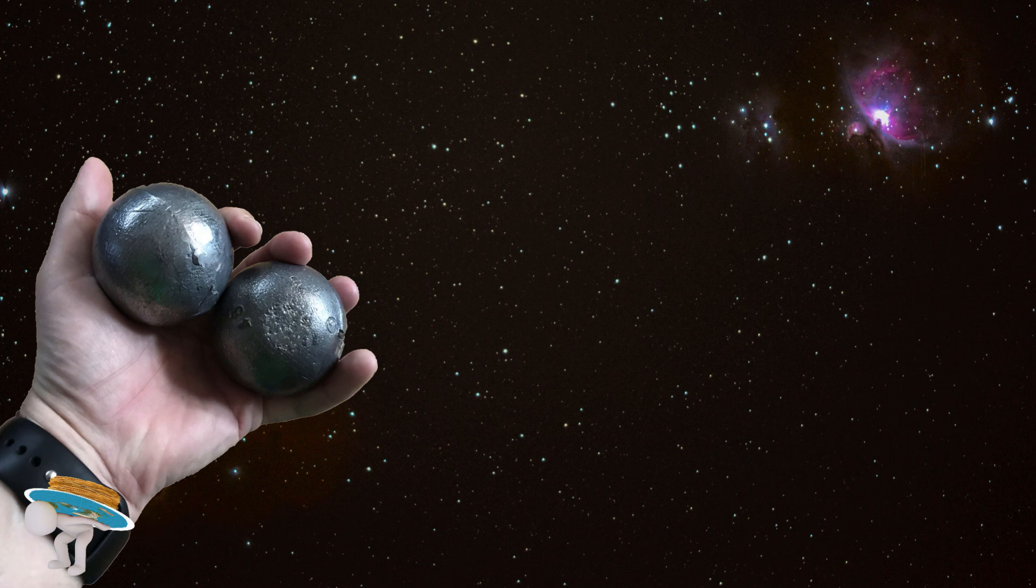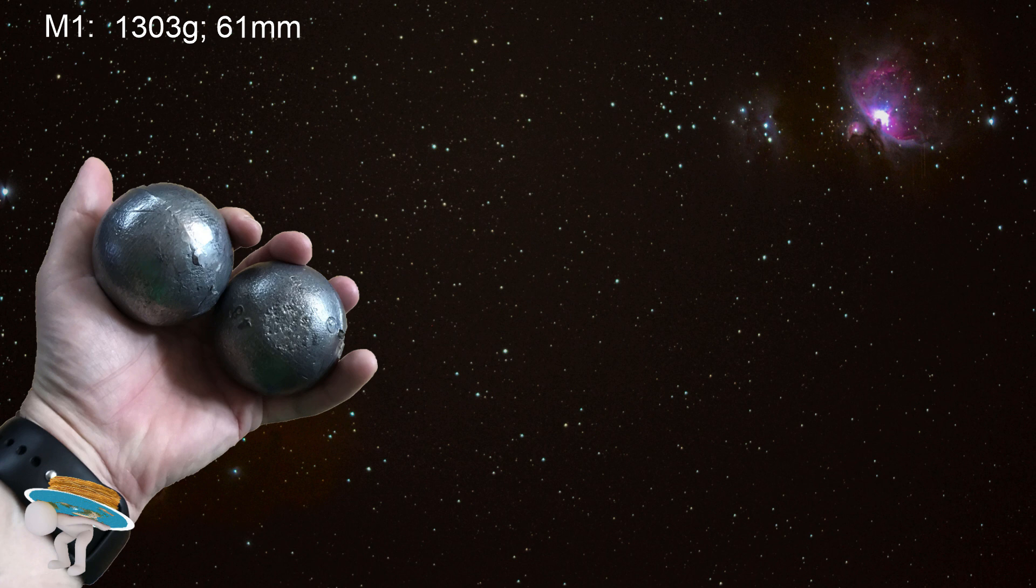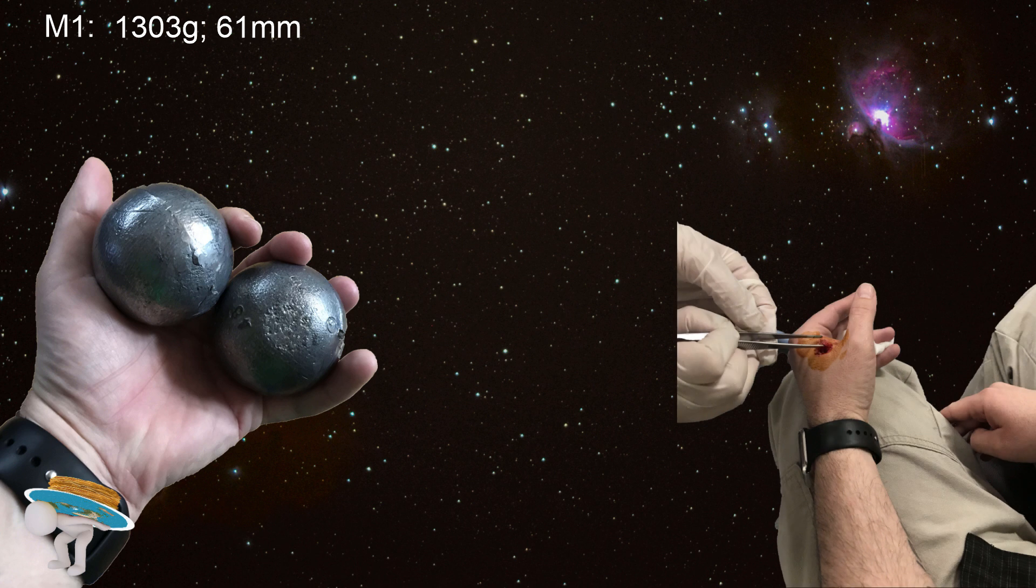The lead sinker weights, or M1, are 1,303 grams each, 61 millimeters in diameter. But also remember that there is a hole drilled out of the center for the torsion bar to enter into.